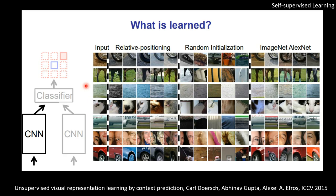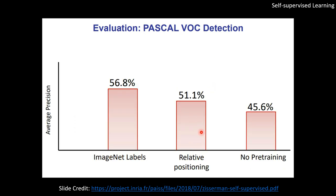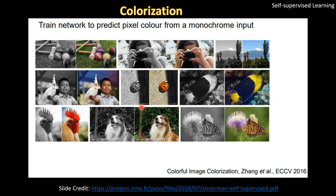This is the result from the paper, showing nearest-neighbor visualization. With an input patch, comparing different approaches: the ImageNet pre-trained model learns good features, random initialization does not, but the relative positioning self-supervised approach has learned pretty good representations. They also transferred this to the main task — Pascal VOC detection — and with relative positioning they got a six percent boost compared to no pre-training.